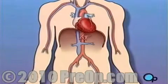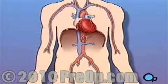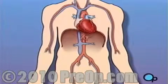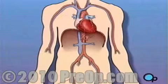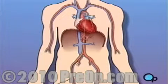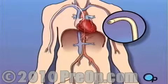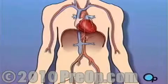In simple terms, a balloon angioplasty with stent insertion is a procedure used to increase the amount of blood flowing through the coronary artery. During a balloon angioplasty, a heart specialist will insert a thin tube into the artery in your arm or leg and gently guide it towards the problem area in your heart.